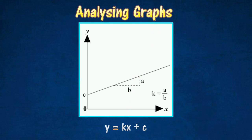This graph shows that y is proportional to x plus a constant. The equation is y equals kx plus c, where k is the gradient or slope of the graph, and c is the y-intercept.